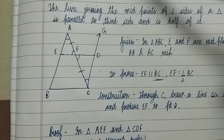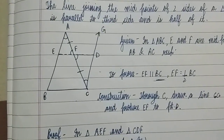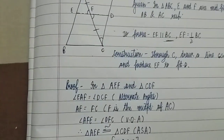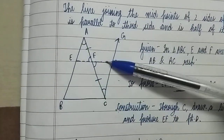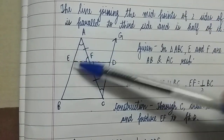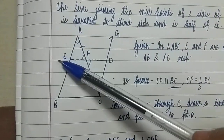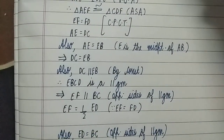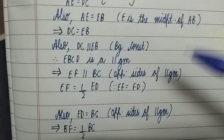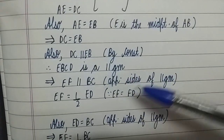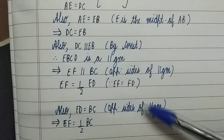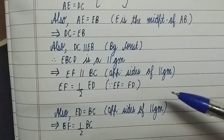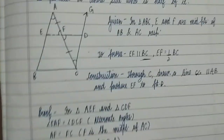For the second part, we already proved by CPCT that EF equals FD, so EF is half of ED. We also know that ED equals BC because these are opposite sides of the parallelogram. Therefore EF equals half of BC. So EF is parallel to BC and EF is equal to half of BC — this completes the proof of the Midpoint Theorem.